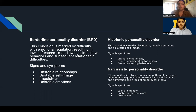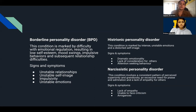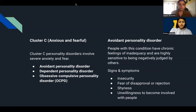Signs and symptoms of Borderline Personality Disorder include unstable relationships, unstable self-image, impulsivity, and unstable emotions. Next is Histrionic Personality Disorder, marked by intense unstable emotions and a distorted self-image. Signs and symptoms include dramatic emotionality, lack of consideration for others, and attention-seeking behavior. The last disorder in Cluster B is Narcissistic Personality Disorder, which involves a consistent pattern of perceived superiority over others and a lack of empathy. Signs and symptoms include lack of empathy, inability to face criticism, and arrogance.